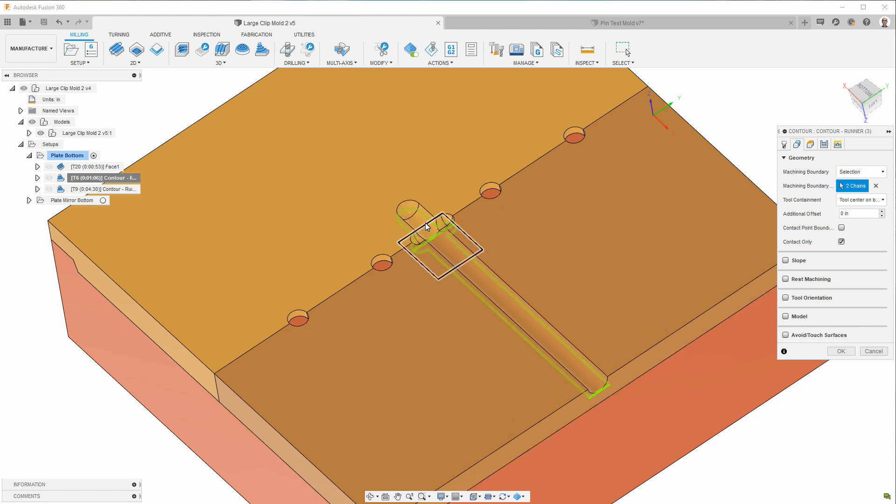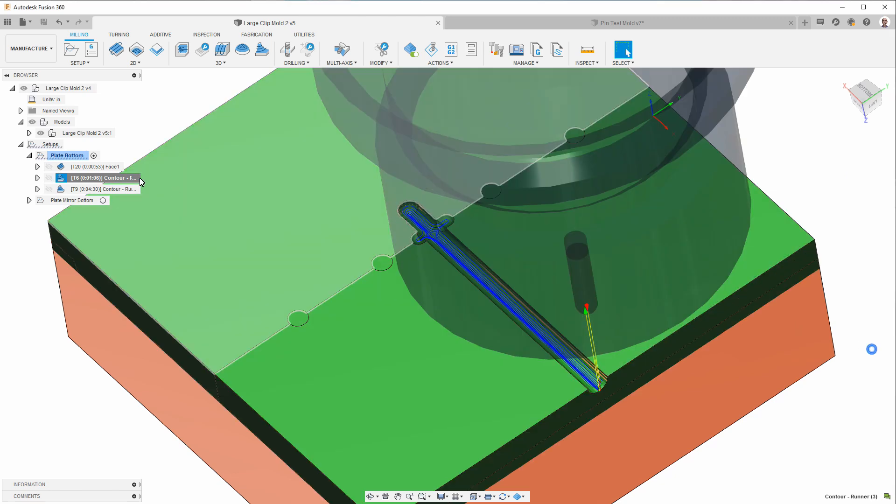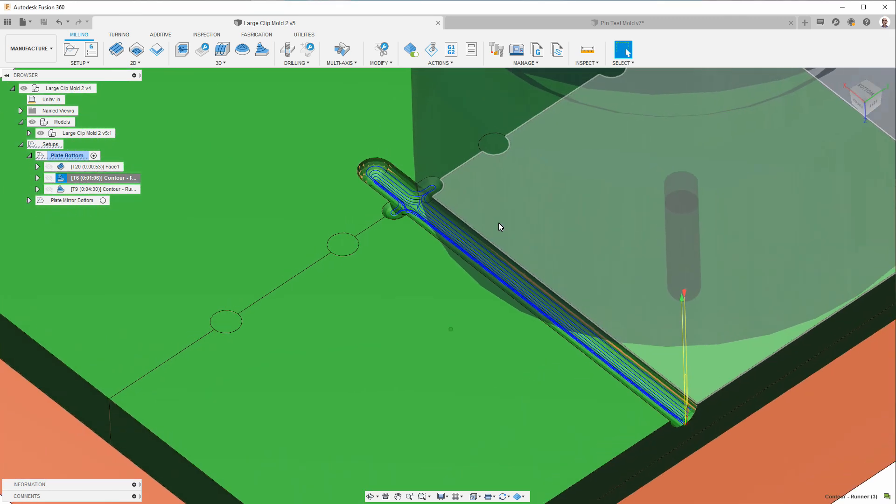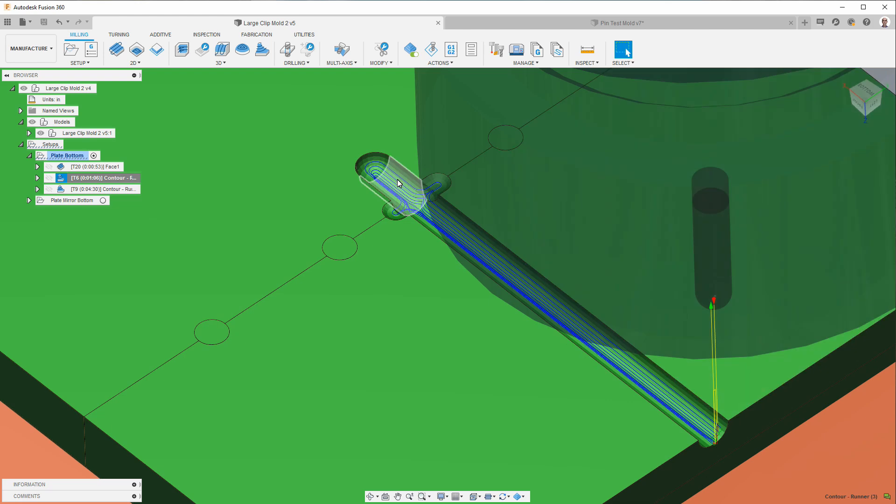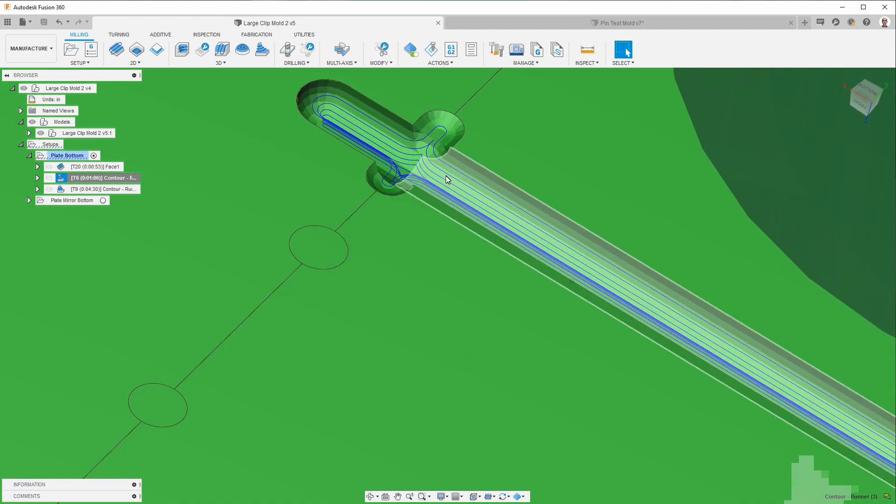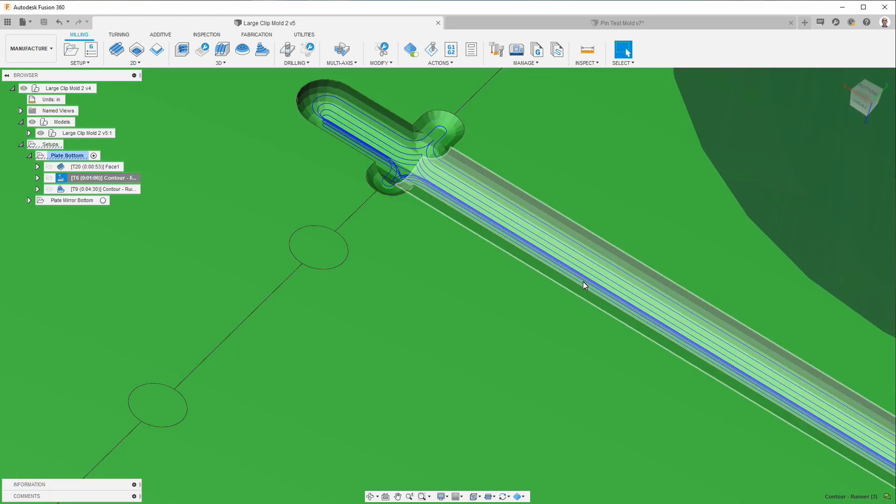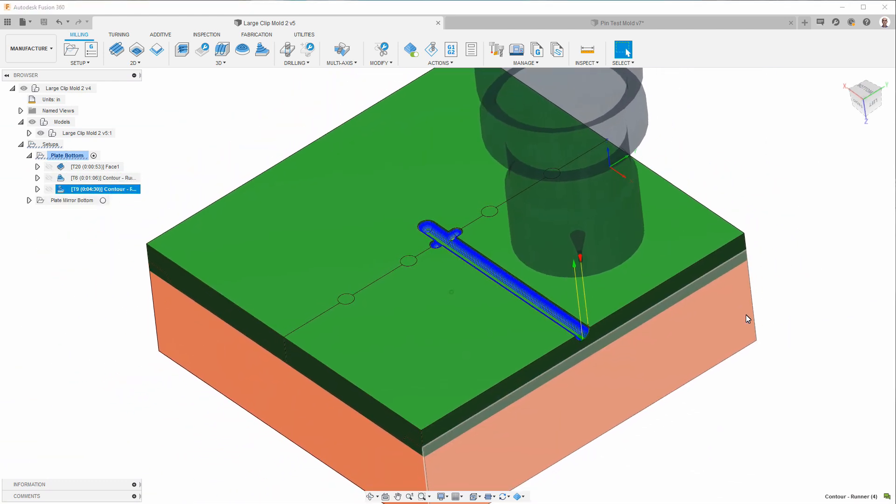Now by doing two of them like this, where they're actually touching, Fusion treats them as a single boundary. And so you can see here that there's no break in the milling operation. This is exactly what I want.